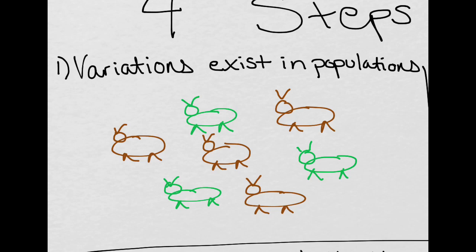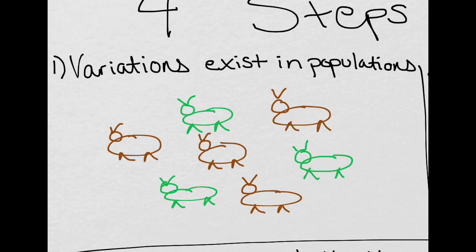And there's also variations in ability. In our sample population, you know, they look so authentic, you probably don't need me to tell you that these are crickets. And in our sample population, we have brown crickets and we have green crickets. So here are our brown crickets and here are our green crickets. So variations exist in populations.